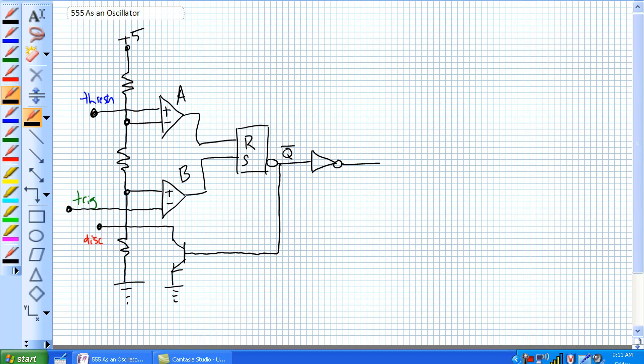Good day, this is Jim Pytel from Columbia Gorge Community College, Renewable Energy Technology Program. This is ET122 Digital 2. Today we're going to discuss how to set up a 555 as an oscillator.